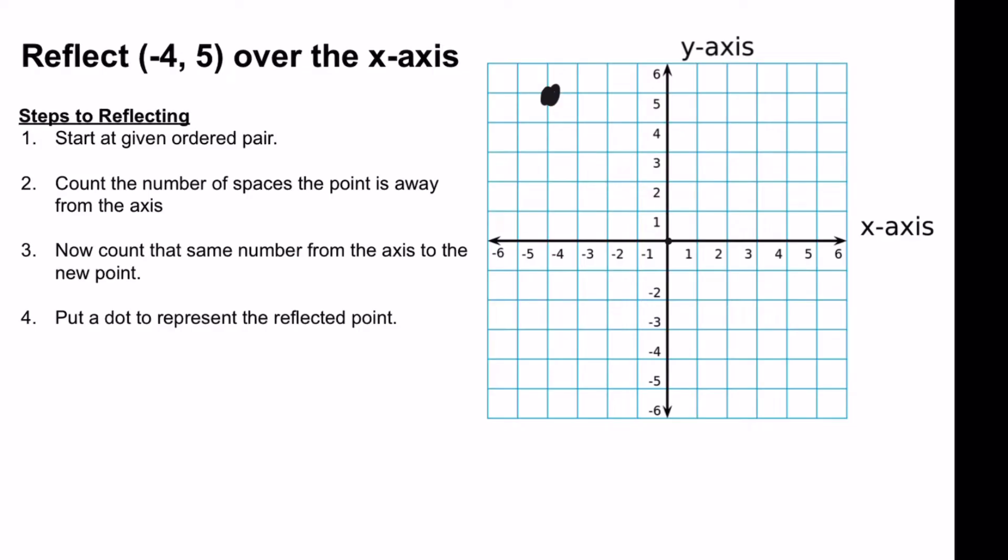So let's reflect this point over the x-axis. So this line here, I'm going to color it red, is our x-axis. So I'm going to count how many spaces the point negative 4, 5 is away from the red line, which is the x-axis.